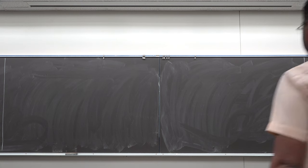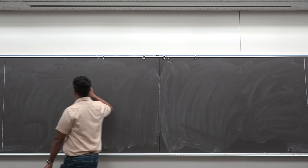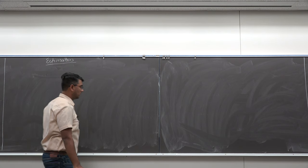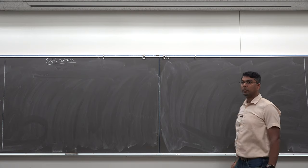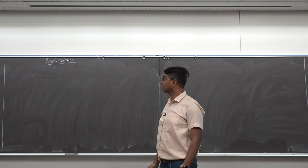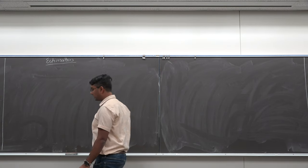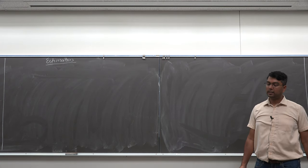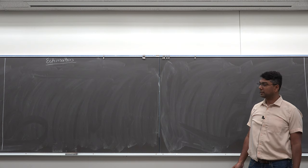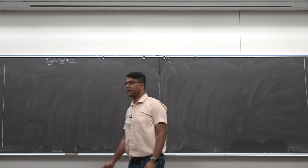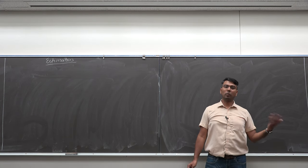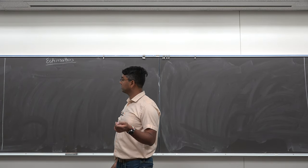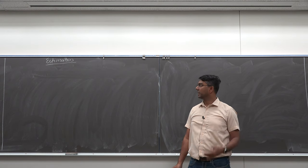Today I am going to talk about estimators. The idea is that we are observing some random variables — for example, the temperature of this room. Every random variable has a mean and a covariance and a distribution. But many times we do not know what the mean and the covariance are, so we need to estimate them from the data itself. As I read the data, I want to process it to figure out the mean and the covariance.